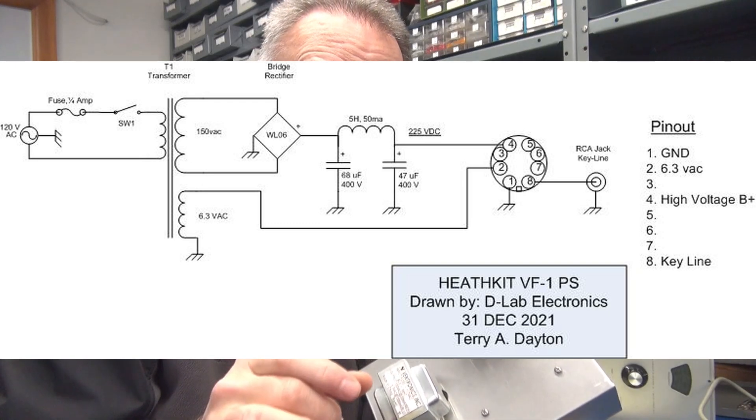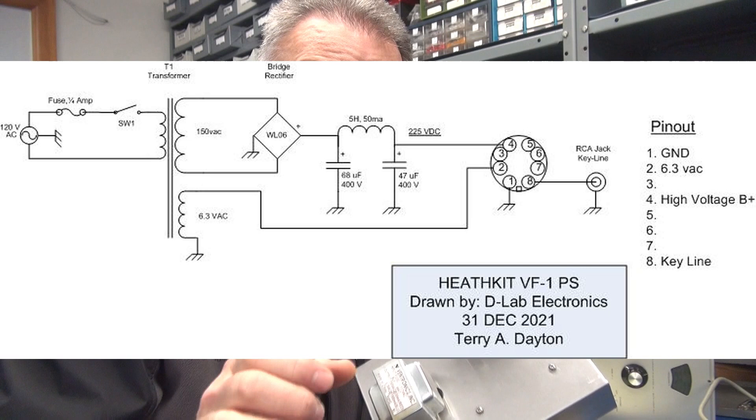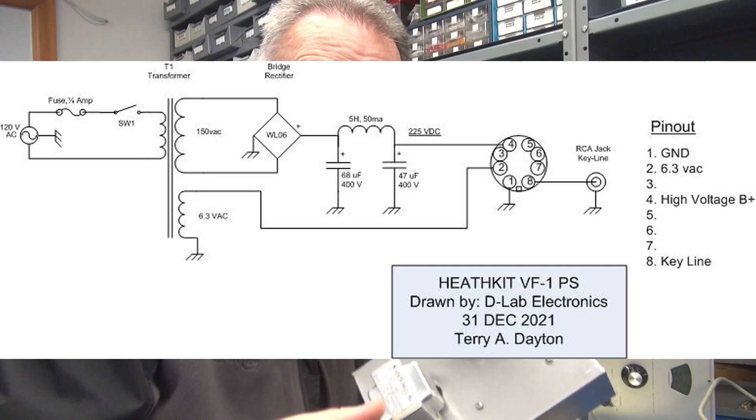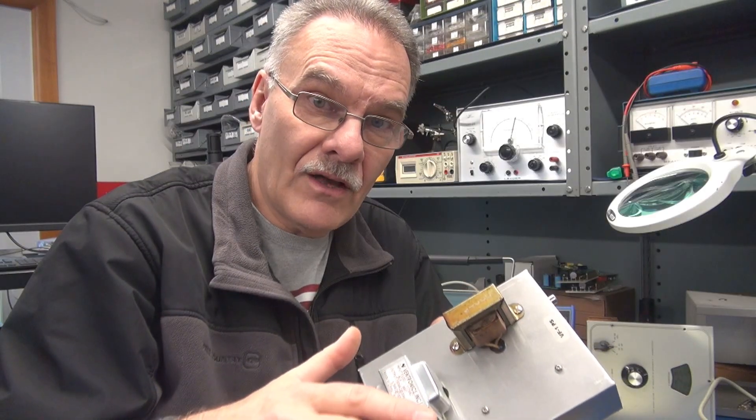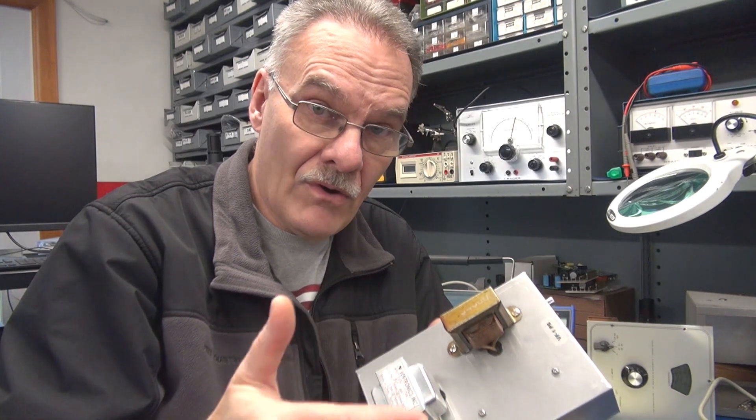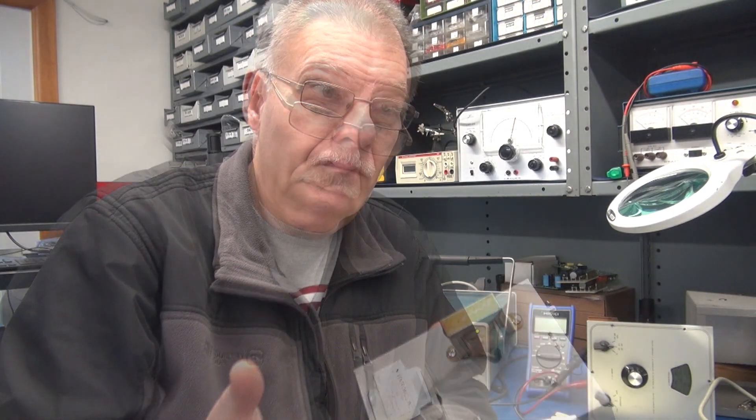You could probably get away without using the choke, but I prefer to use that to stiffen up that power supply. The voltage regulation itself is taking place in the VFO via the OA2 voltage regulator tube.